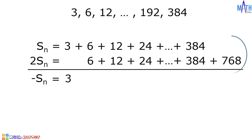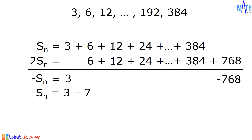And lastly, 0 minus 768 equals negative 768. On the left side of the equation, we have negative S sub n. On the right side, we have 3 minus 768. Let us simplify. We have negative S sub n equals 3 minus 768, which is equal to negative 765. To solve for S sub n, we will divide negative 1 to both sides of this equation. Negative S sub n divided by negative 1 is equal to S sub n. Negative 765 divided by negative 1, the answer is positive 765.